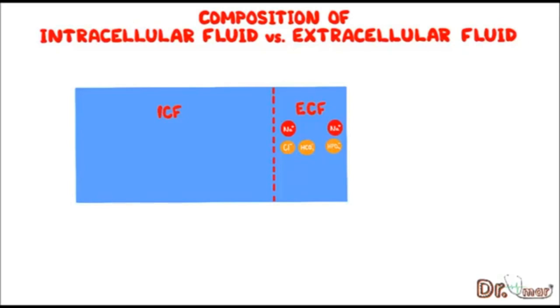The major cations in intracellular fluid are potassium and magnesium, and the balancing anions are either proteins or organic phosphates.